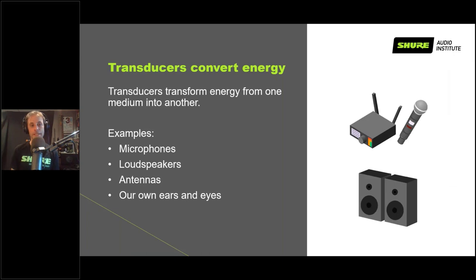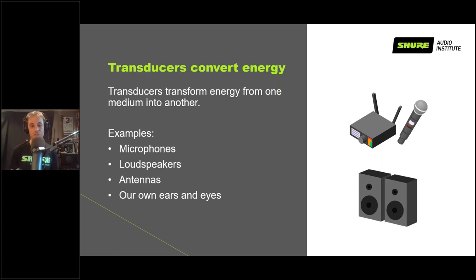A microphone is a very basic device with really only one job: to convert sound waves — the compression and rarefaction of air molecules — into a varying voltage that is analogous to the sound wave itself. A transducer is anything that changes one form of energy into another. Loudspeakers are also transducers, doing the opposite — taking a varying voltage and changing it back into variations in air pressure that we hear as sound.